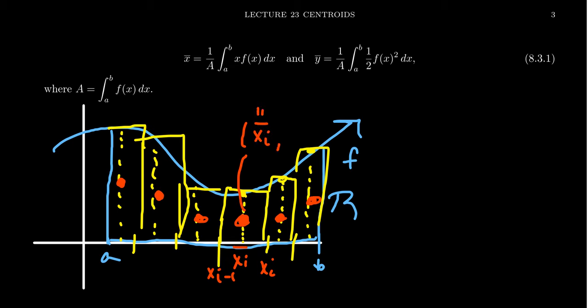And then the y-coordinate, the y-bar, is just going to be halfway up this thing, which the height of the whole rectangle is f of xi bar. And then we're going to take half of that. So the center of mass for a single rectangle is xi bar and one-half f of xi bar. We get that center.